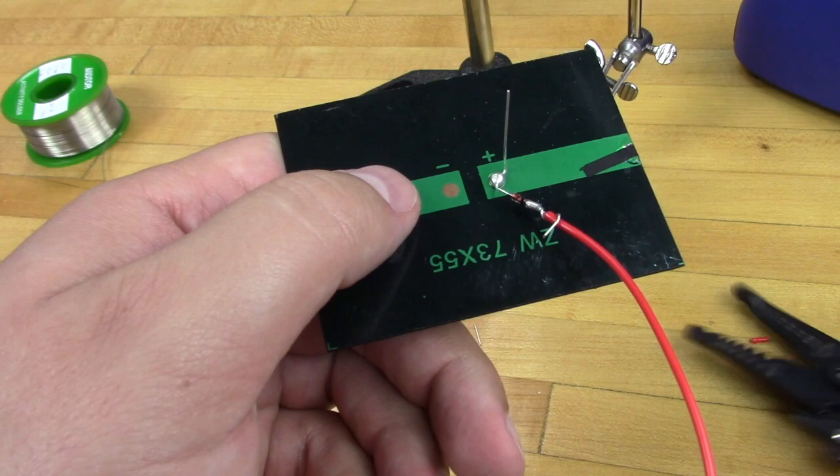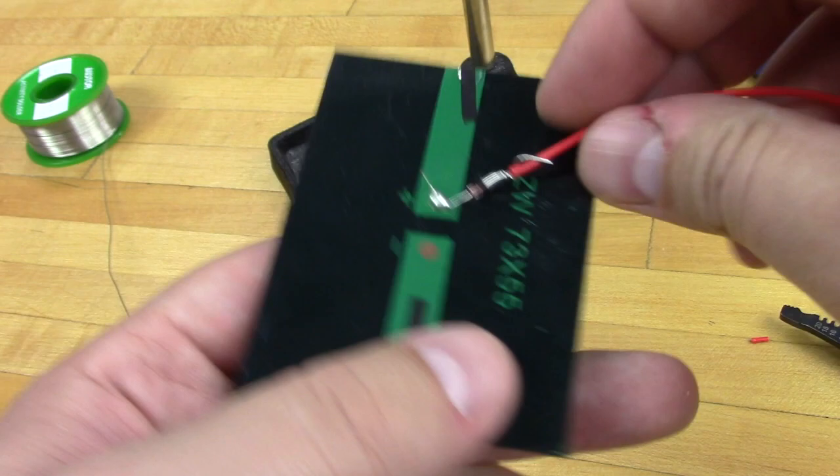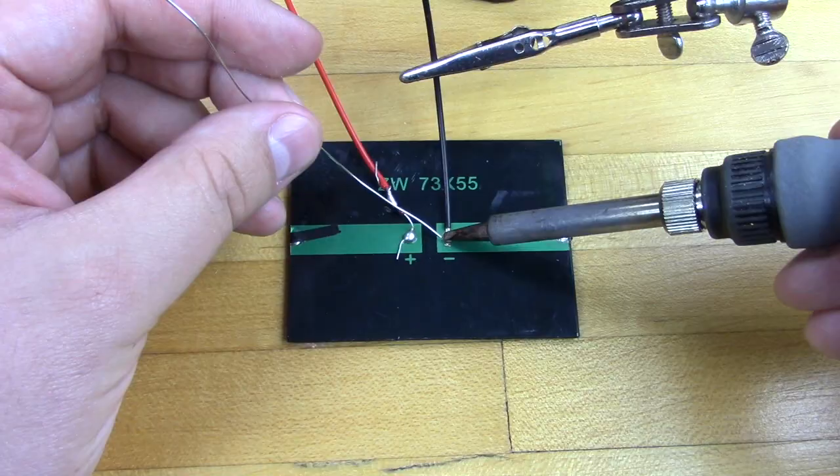At this point you want to snip off the excess legs of your diode. First kind of bend them out in a way that's easy to cut and then snip them off. We don't need them at all and at this point they're completely useless.